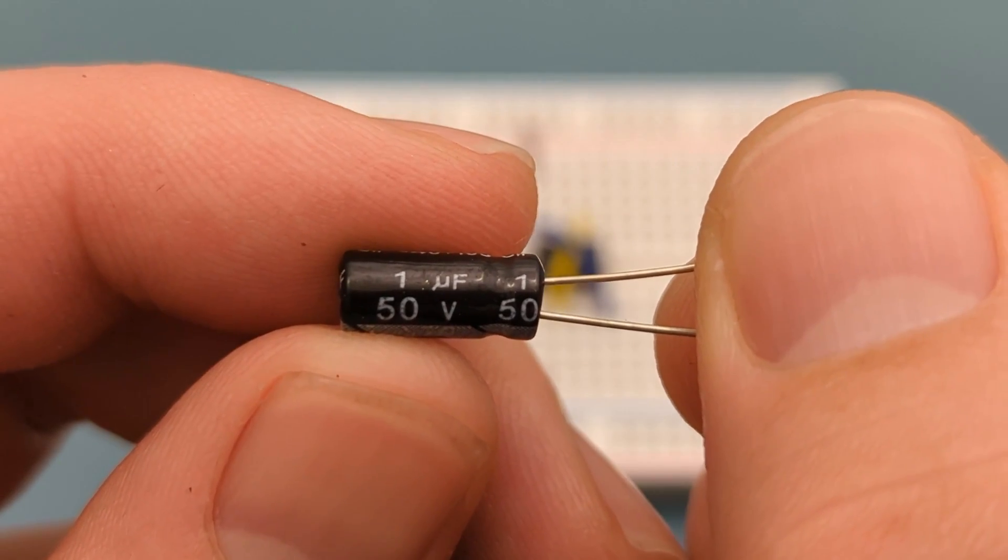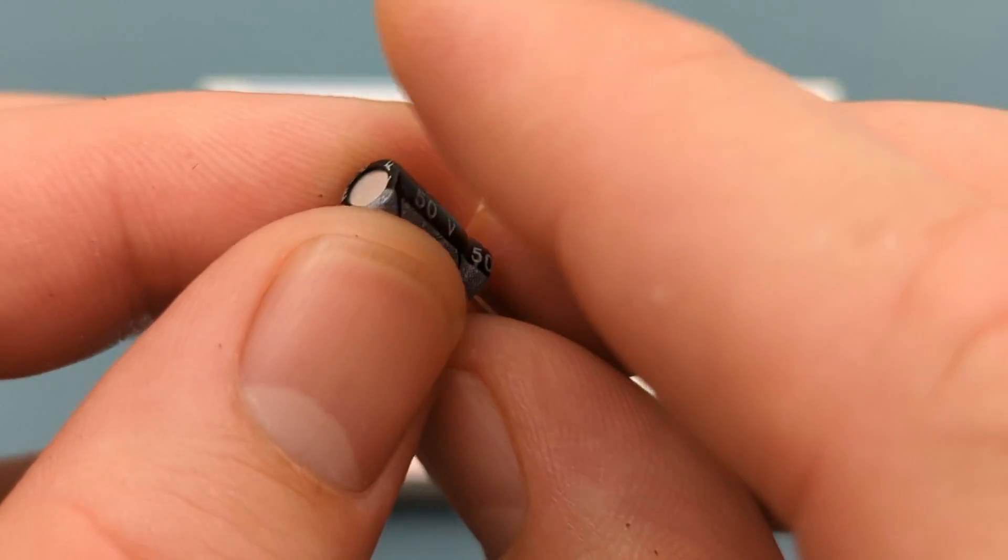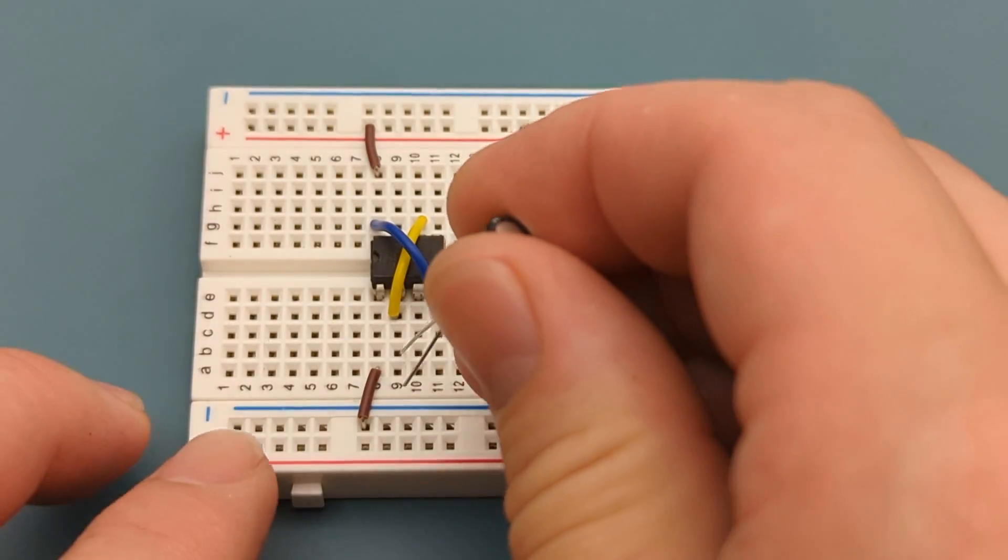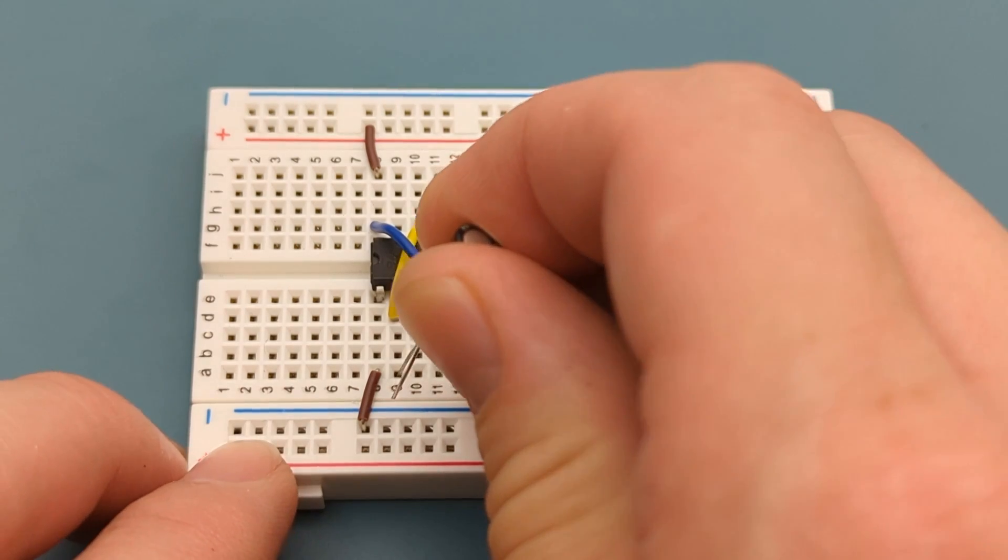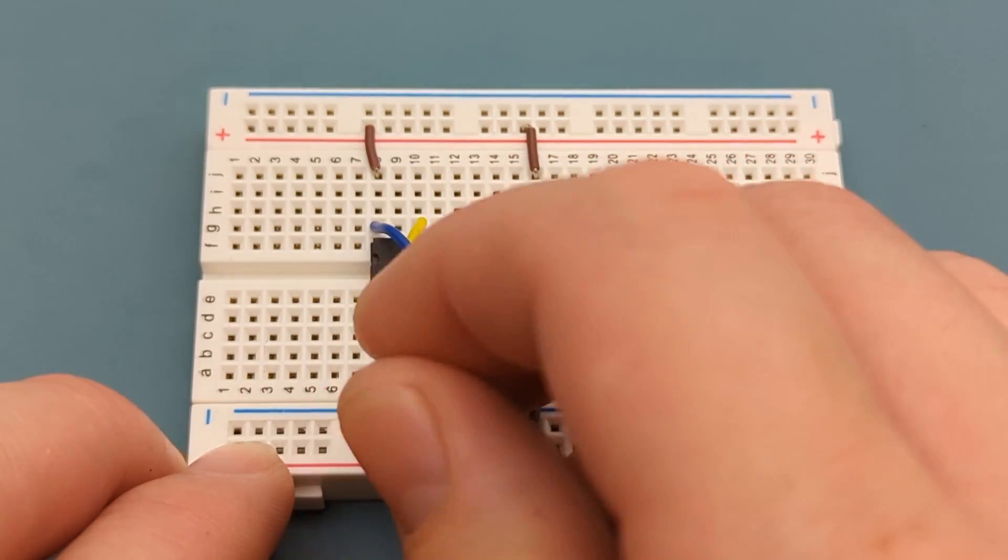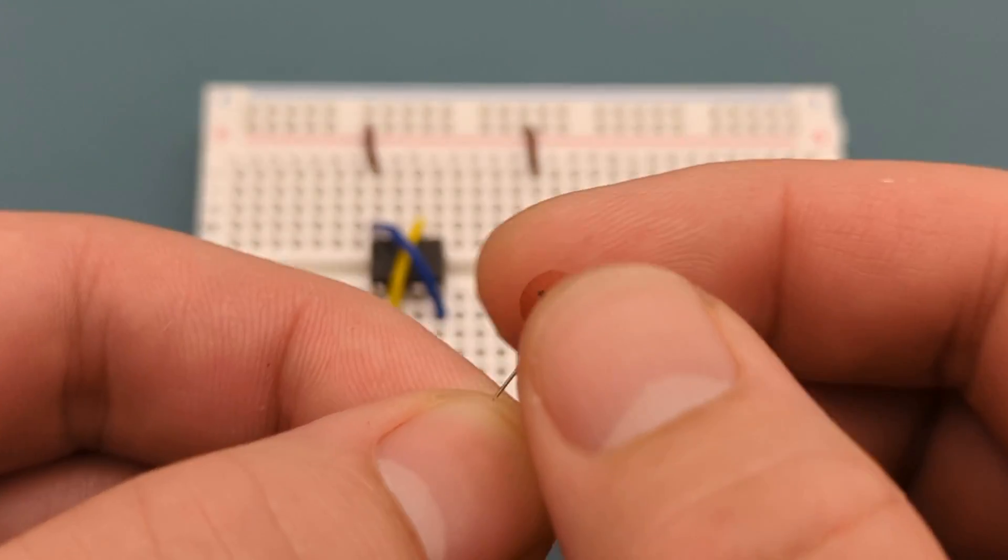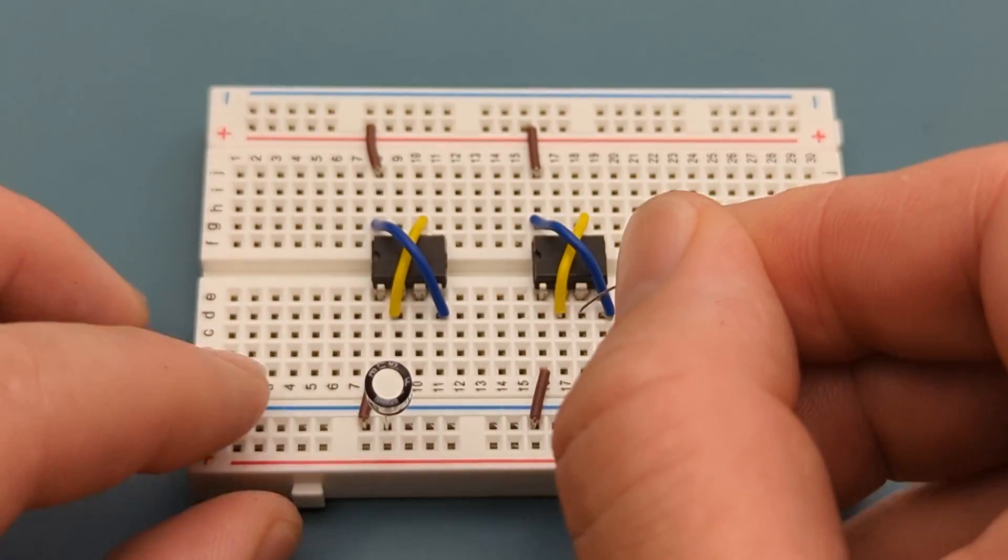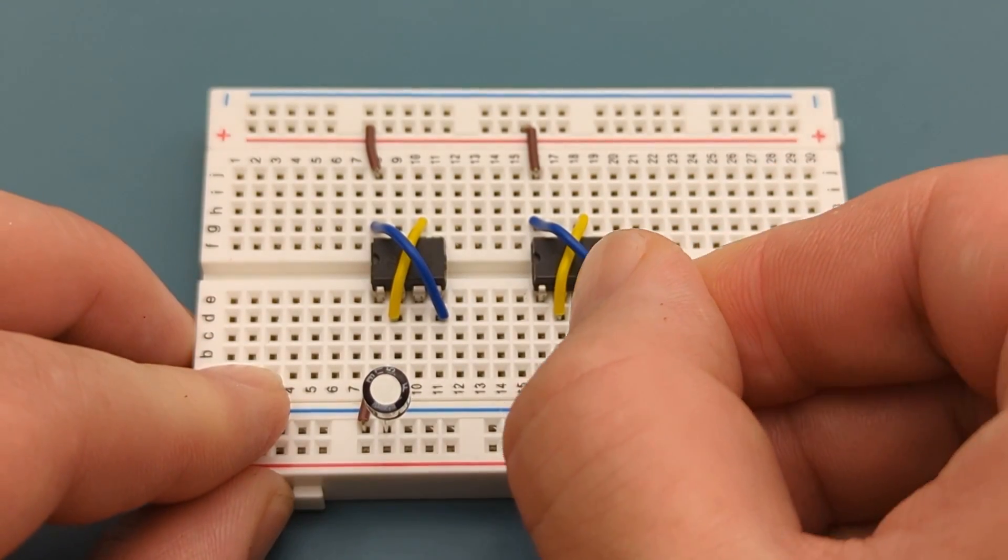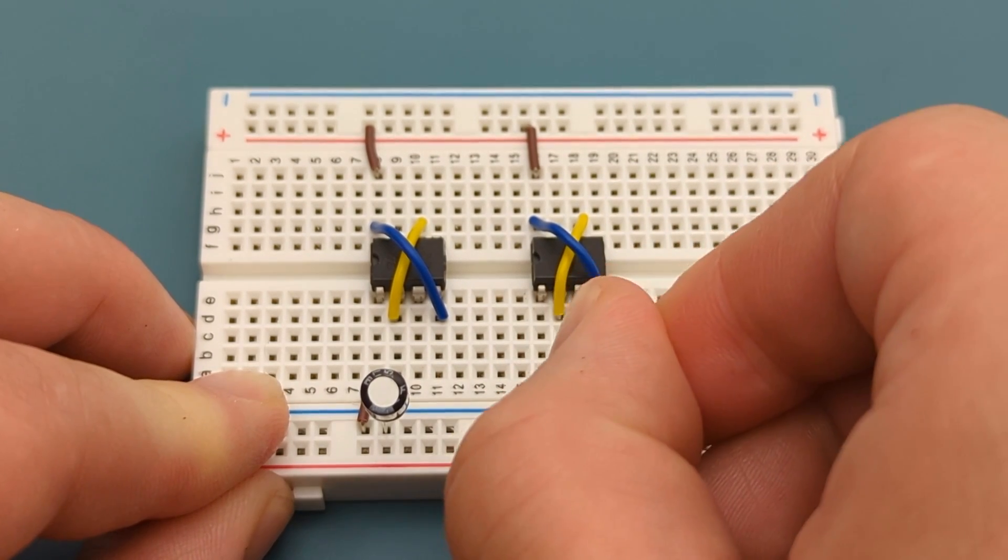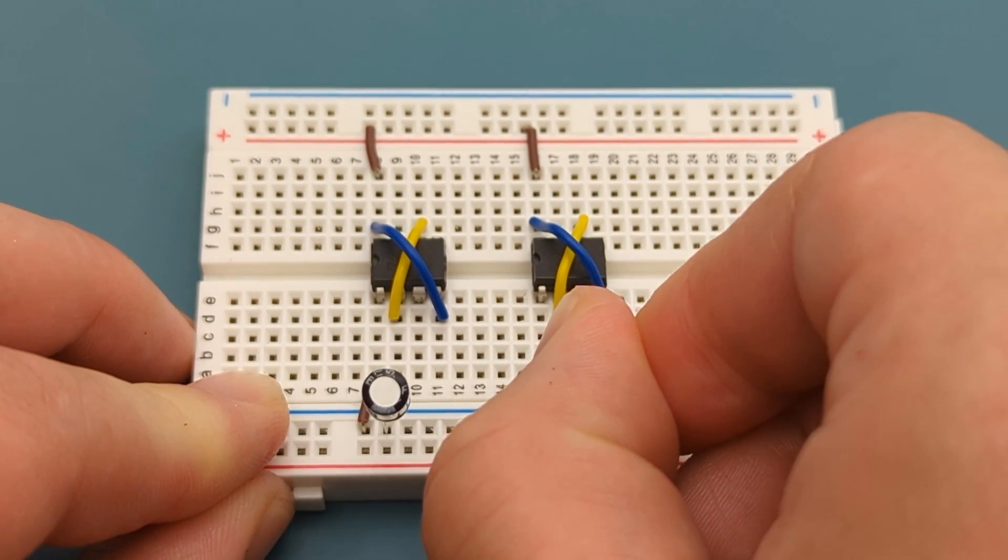Insert a 1 microfarad capacitor into pin 2 or trigger and the negative rail. The anode is in pin 2. Insert a 0.1 microfarad capacitor into pin 2 or trigger and the negative rail of the second 555 timer. Since ceramic capacitors don't have polarity, you can insert either leg into pin 2 without any issues.